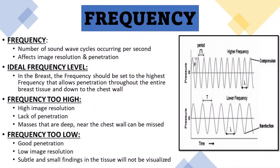The first ultrasound control that I adjust when doing a breast ultrasound is frequency. Frequency is the number of sound wave cycles that happen in one second, and this affects image resolution and penetration. Ideally in the breast, the frequency should be set to the highest frequency that allows you to penetrate all the way through the entire breast tissue and down to the chest wall.